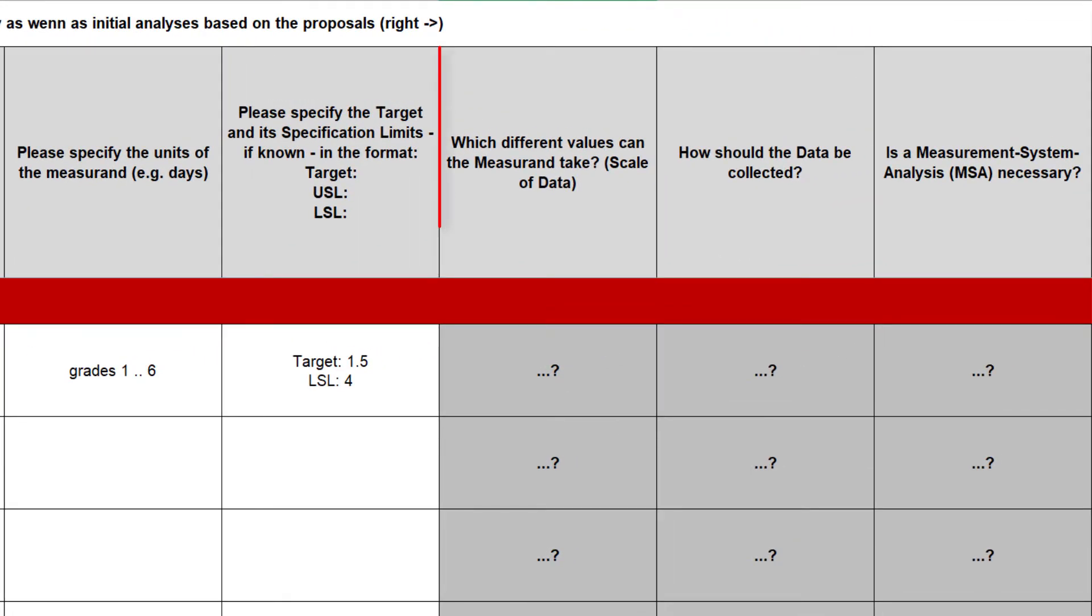The next question, which different values can the measurement take, serves to determine the scale level of the measurement. The level of a rating scale is ordinal. Optional in this list are additionally the nominal scale with data in two different categories, such as gender, the nominal scale with data in more than two different categories, such as the means for transportation, and the cardinal scale, for example data of time, weight or size.